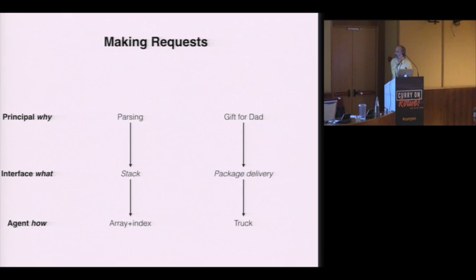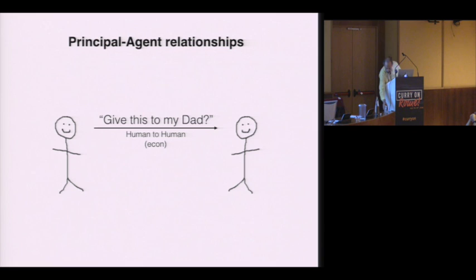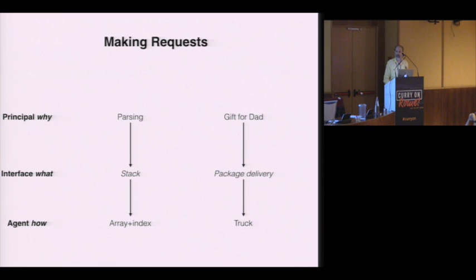A simple example in our world of request making is when a parser asks a stack to push a token. In economics, a simple request might be that I have a gift I want my dad to receive, so I walk into a package delivery business and ask them to deliver the gift. In economics, the term for the request-making entity is the principal, and the term for the entity that responds to the request is the agent.